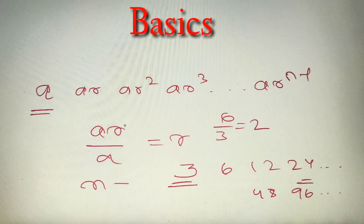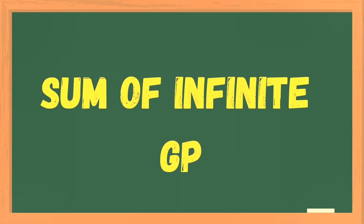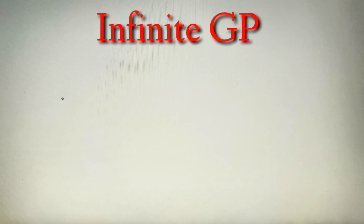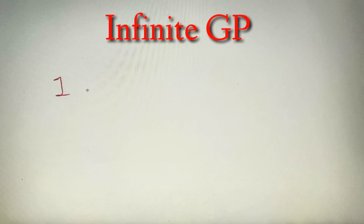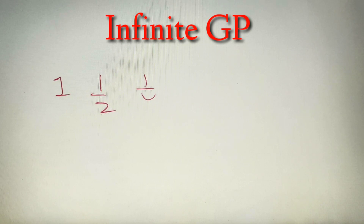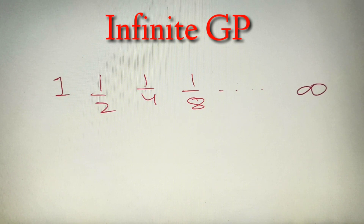This was the basic knowledge required to understand infinite GP. Now let's move on. If a GP consists of an infinite number of terms, it is known as an infinite GP. For example, if the first term is 1 and the common ratio is 1/2, then the sequence is 1, 1/2, 1/4, 1/8, and so on up to infinity.